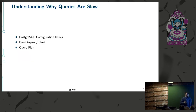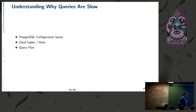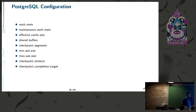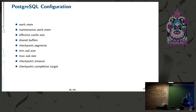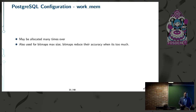Now let's talk about why your query is slow. There are a lot of different potential causes. We'll cover Postgres configuration, tuples and bloat, and query plans. The first configuration option is work_mem.